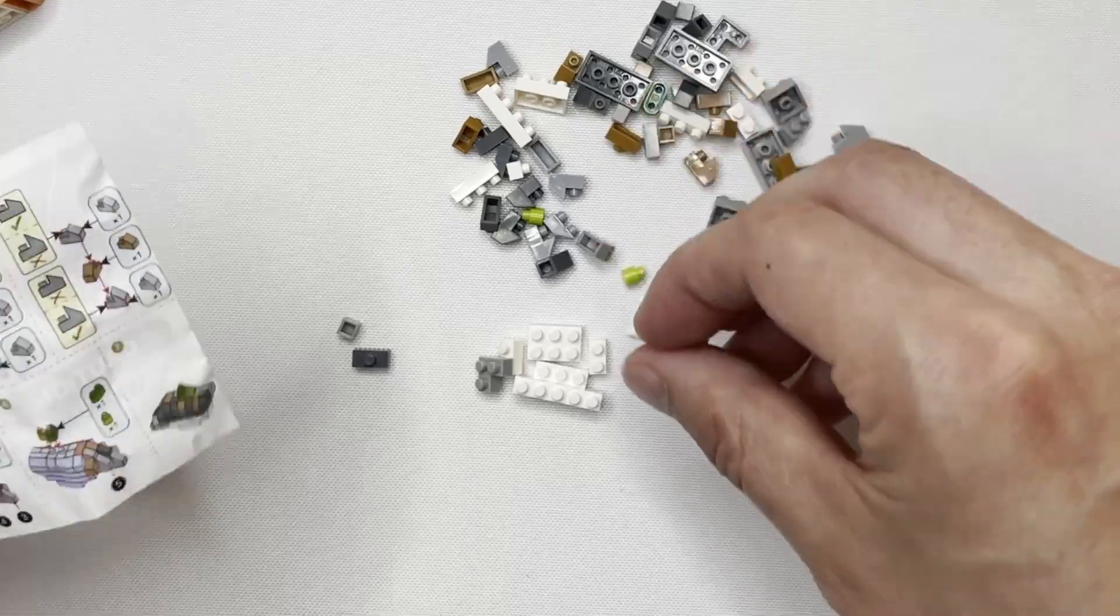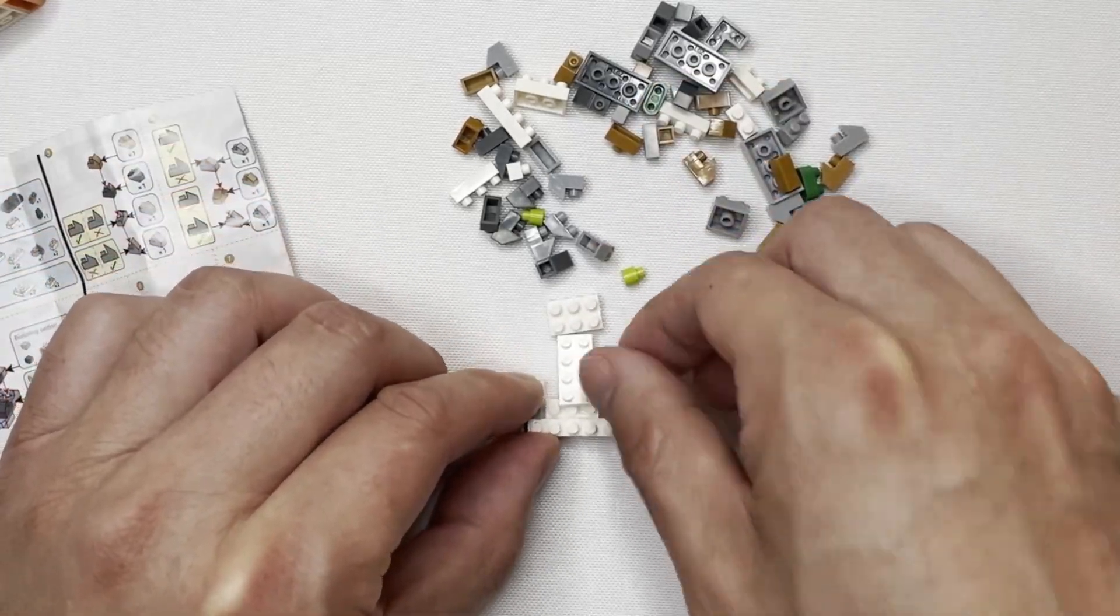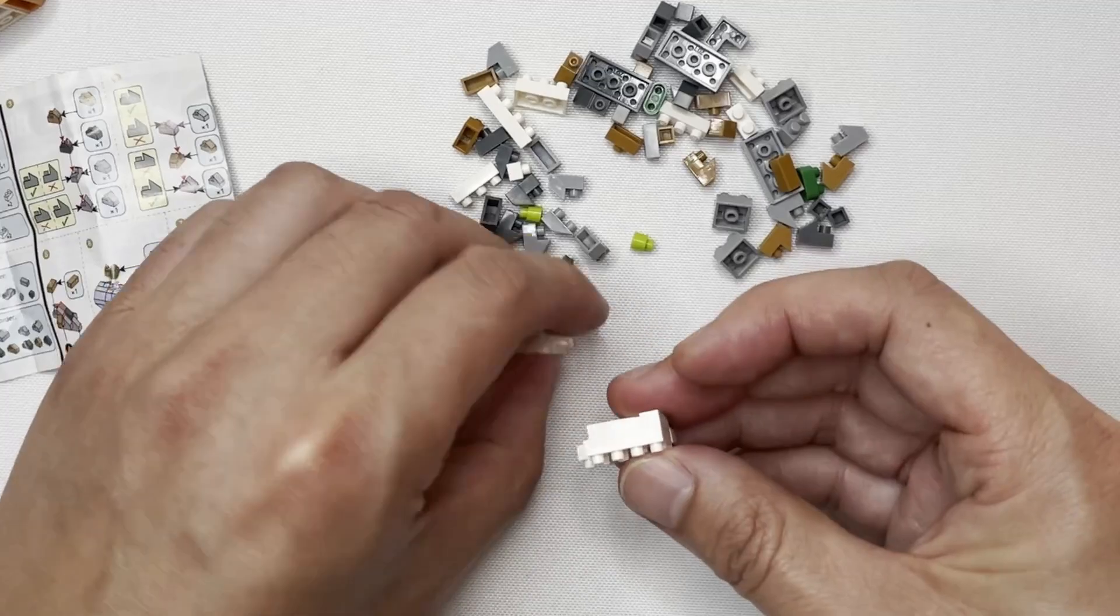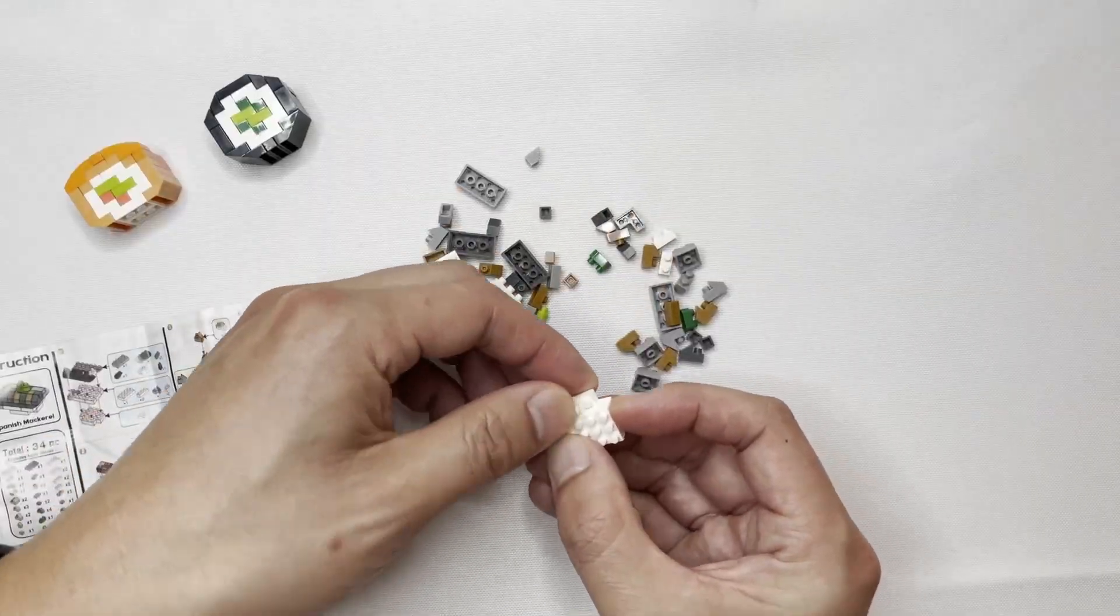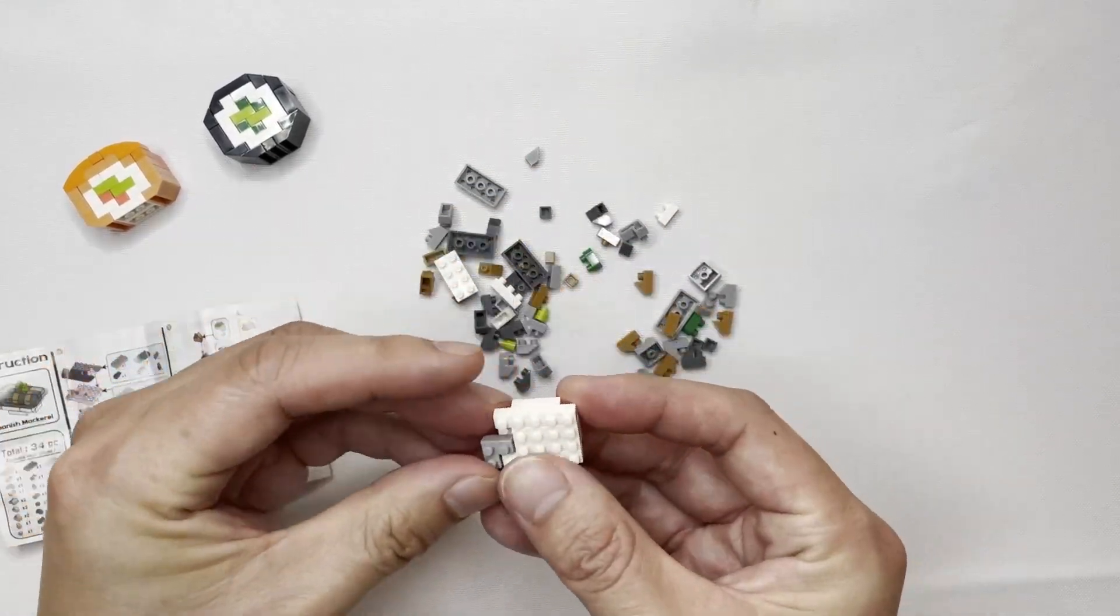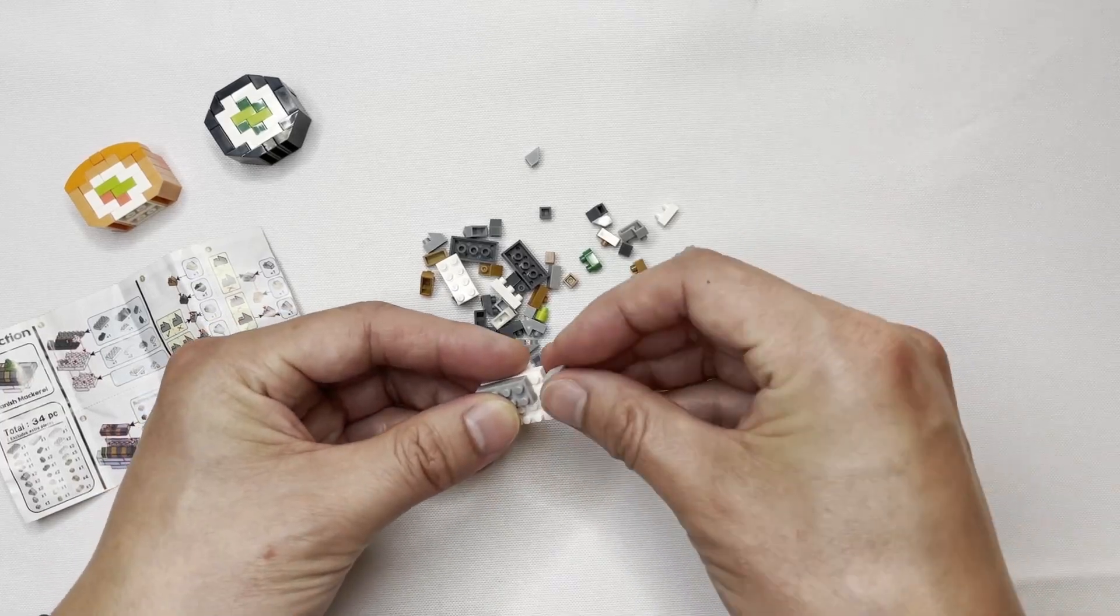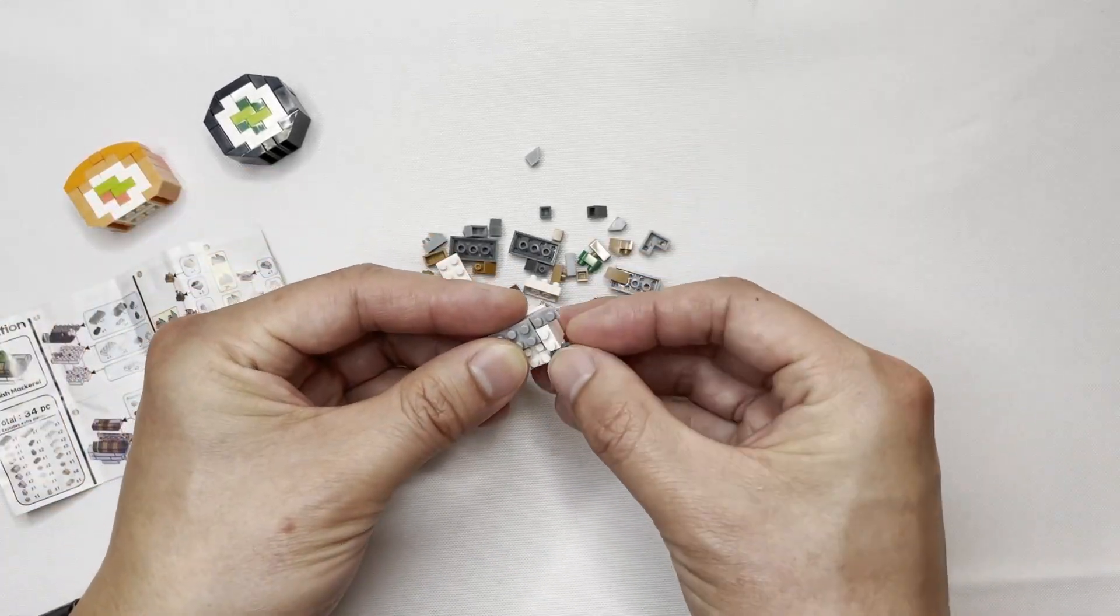Overall I think the cucumber roll probably looks most accurate to its real-life counterpart. I think that if I did not tell you guys what these nano blocks represented beforehand you'd all probably assume that they were anything but sushi right?